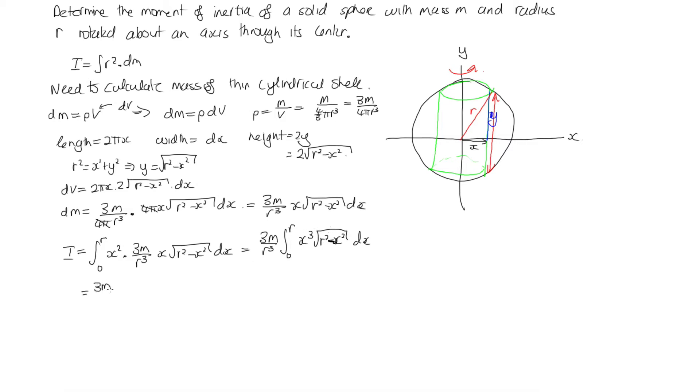And I get 3m over r³, and then my integral is -1/15 (r - x)(r + x)^(3/2) times (2r² + 3x²), and this is from 0 to r.